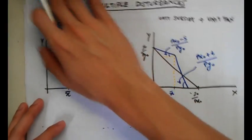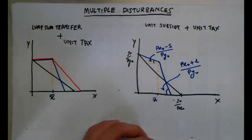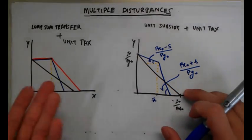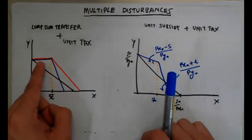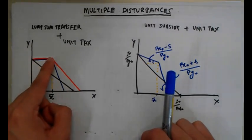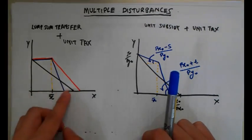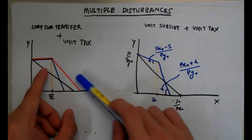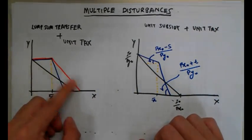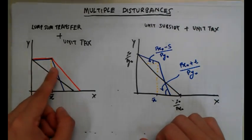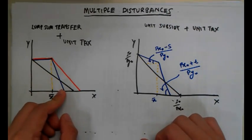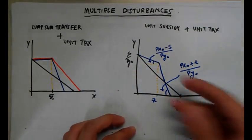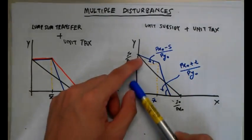Questions may involve multiple disturbances — for example, a lump sum transfer combined with a per unit tax, or a per unit subsidy followed by a per unit tax. Looking at the left-side example: the first portion shows the lump sum transfer, and the second portion shows the per unit tax. There are two possibilities depending on the size of the tax — if it's large, the constraint lies outside; if small, it lies inside.